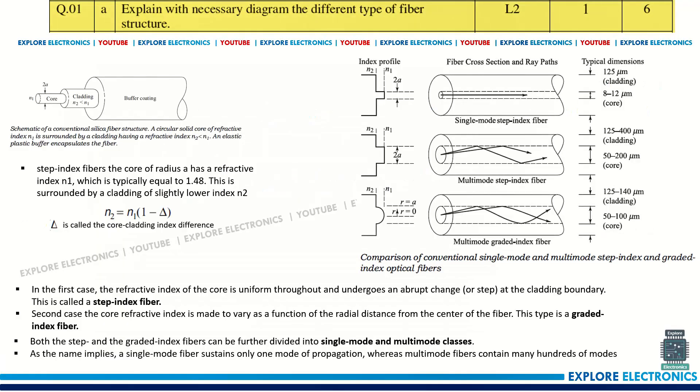The very first question is: explain with necessary diagram the different types of fiber structure. Here in the figure you can see single mode step index fiber, multi-mode step index fiber, and multi-mode graded index fiber — the three different types — along with related dimensions and a brief explanation. The diagram will carry two to three marks and the related explanation for all three will carry three marks.